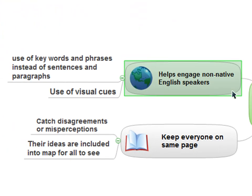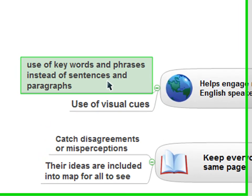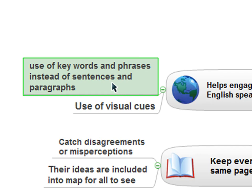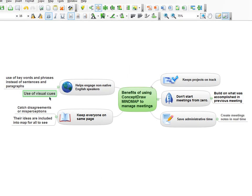Finally, and interestingly, it helps engage non-native English speakers. It helps them understand what's going on in the meeting and helps them contribute. Instead of handing around meeting notes that are pages and pages of sentences and paragraphs — which are harder for non-native speakers to process — they can look at a map that's got just a few words, short phrases, short sentences. People can really understand what went on in the last meeting and what's going on in this one. They can participate more, and the use of visual cues helps them understand what's going on. So those are just a few of the ways that ConceptDraw Mind Map can help you manage meetings. Stay tuned for more tutorials, and see you next time.